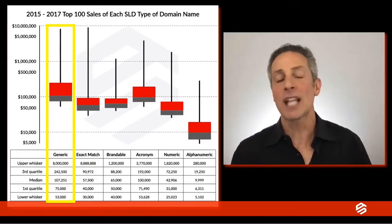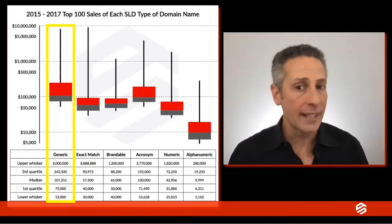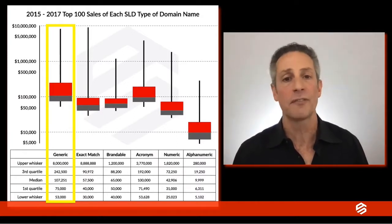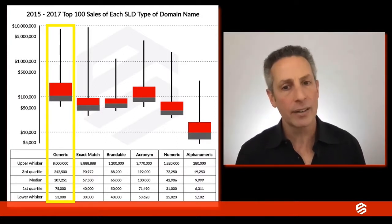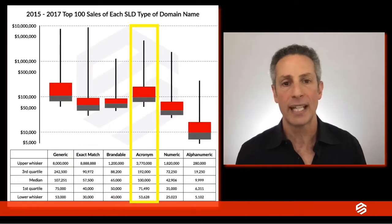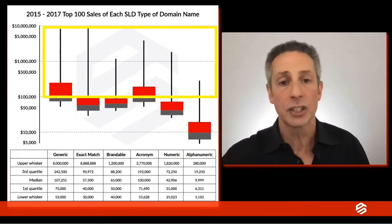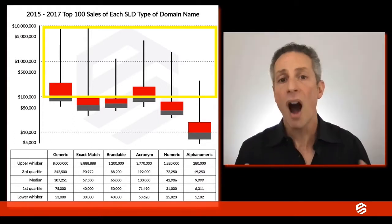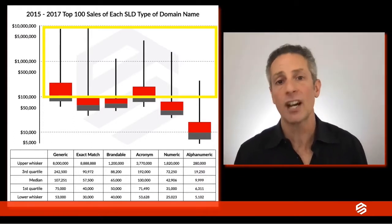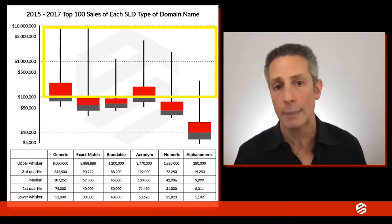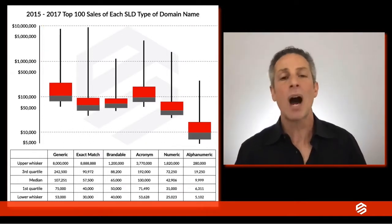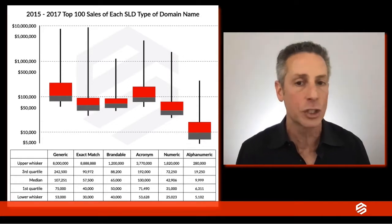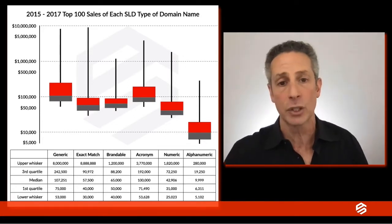Generic domain names like we.com, fly.com, and freedom.com have a median value of $107,251. When we compare them to the other five types of domain names, we can see that 50% of those generic domain names from the median value to the top are higher than 75% of all other domain name types except acronyms. This is why generic domain names continue to top the weekly DN Journal sales list and are strong investment opportunities.